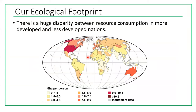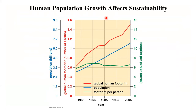Looking at the globe, different nations have very different ecological footprints. Well-developed countries shown in darker areas are truly nations of consumers, while other countries have very limited resources. Three line graphs show that the footprint per person has leveled off, but because the population is growing, our global footprint continues to rise.